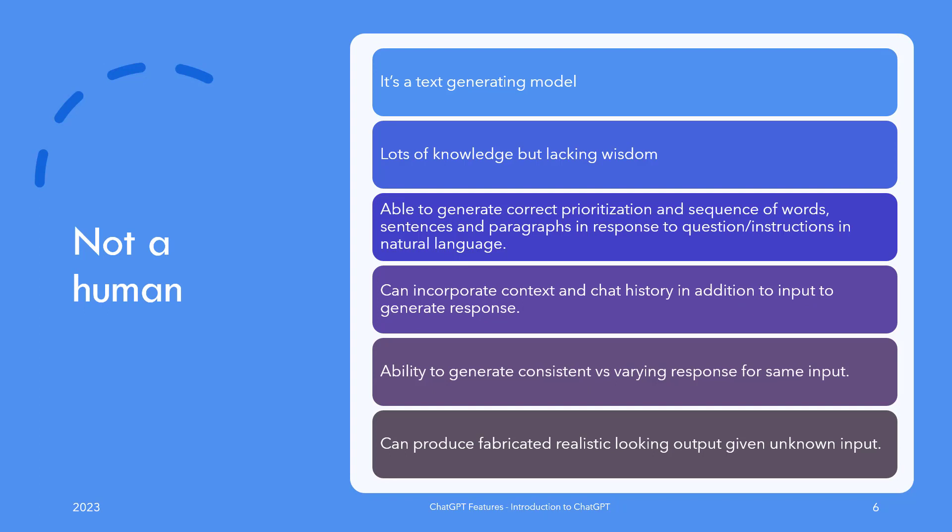It has the amazing ability to come up with correct prioritization of words and tokens, leading to sentences and paragraphs given a natural language input. It can also incorporate context and your chat history to update its response accordingly, and has the ability to generate consistent versus varying output given the same input. But at the same time, it can generate totally fabricated but really realistic-looking nonsense if it encounters an unknown question — there is even a name for it: hallucinations. Be on guard if asking about something for which information online is scarce.